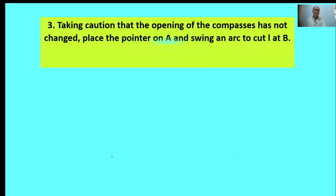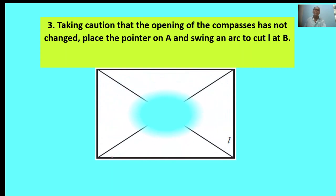Third point: Taking caution that the opening of the compass has not changed, place the pointer on A and swing an arc to cut L at B. This is the L line, cut at B.